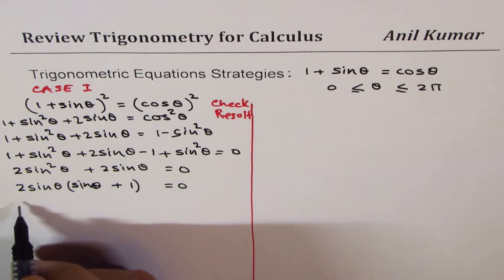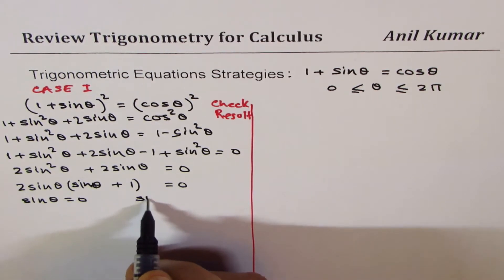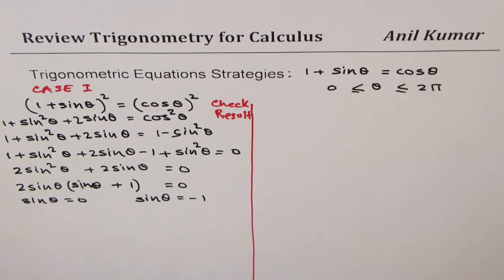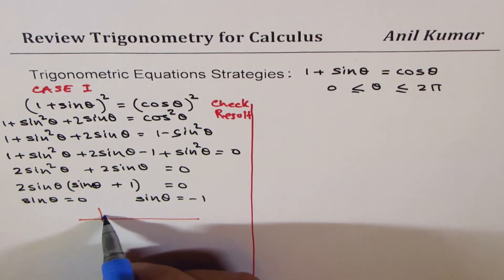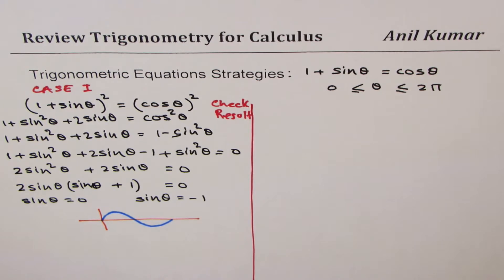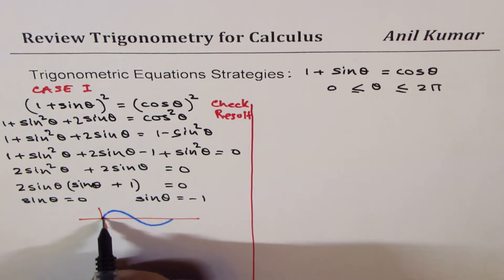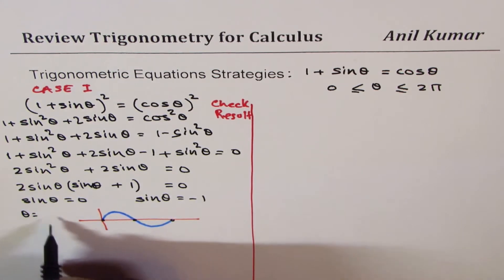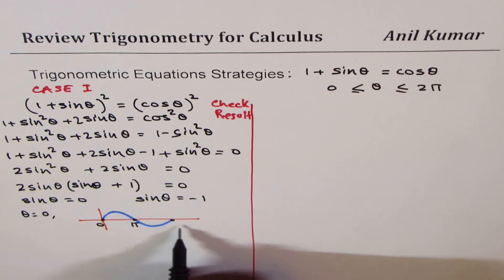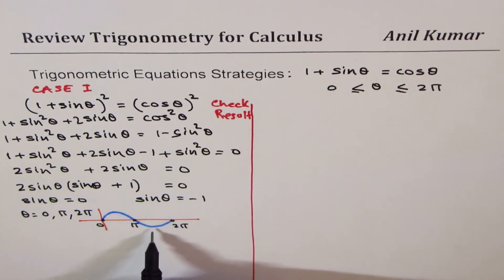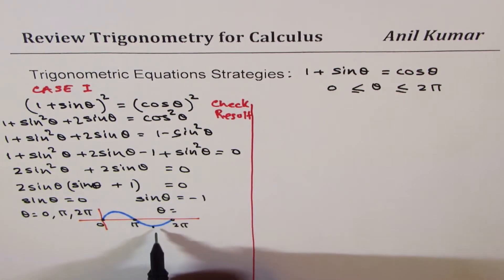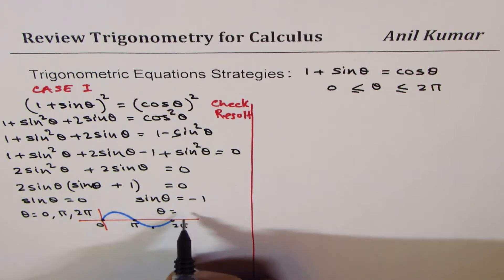For this equation to be true, sine theta could equal 0 or sine theta could equal minus 1. When looking for sine theta solutions, it is good practice to sketch the sine curve. From the graph, sine is 0 for theta equals 0, pi, and 2 pi. Sine theta equals minus 1 for theta equals 3 pi by 2.